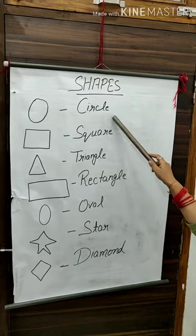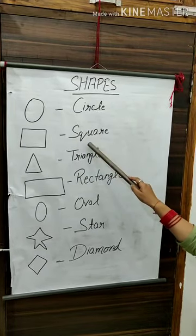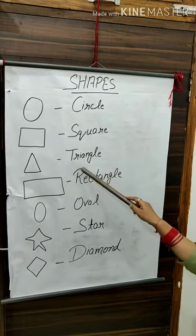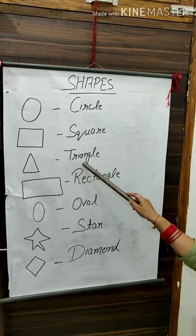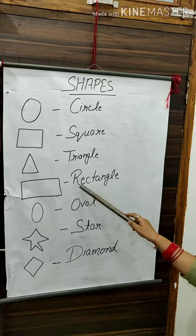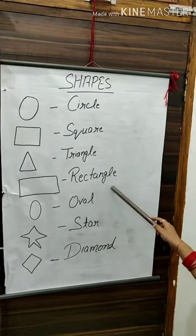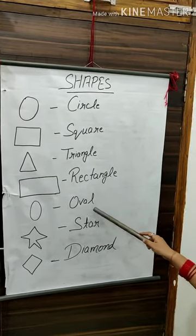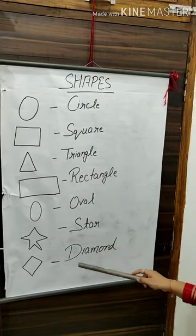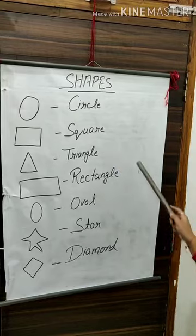C-I-R-C-L-E circle, S-Q-U-A-R-E square, T-R-I-A-N-G-L-E triangle, R-E-C-T-A-N-G-L-E rectangle, O-V-A-L oval, S-T-A-R star, D-I-A-M-O-N-D diamond.